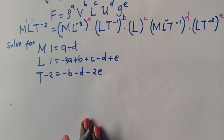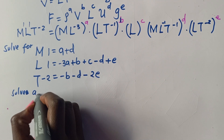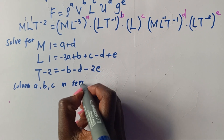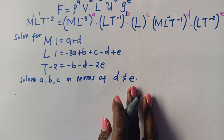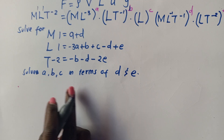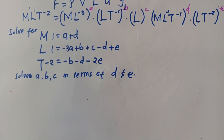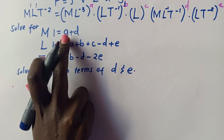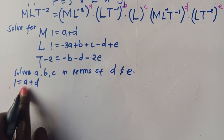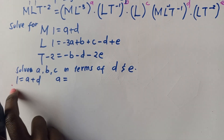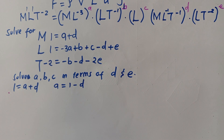We solve A, B, and C in terms of D and E. That means A, B, and C will be expressed with D and E still appearing as unknowns. From the M equation: 1 = A + D, so A = 1 minus D.